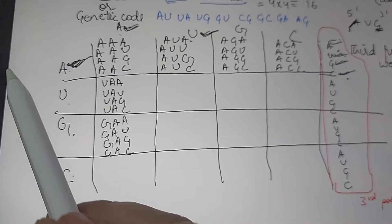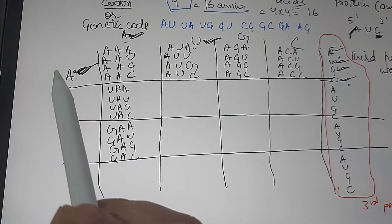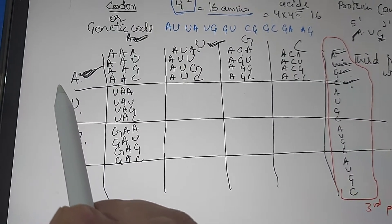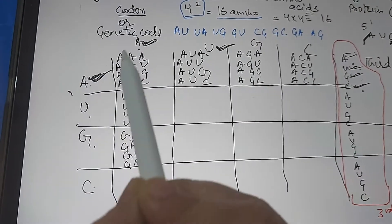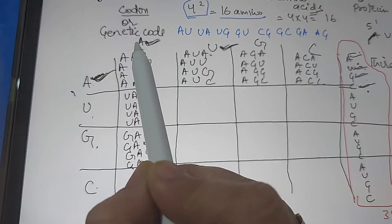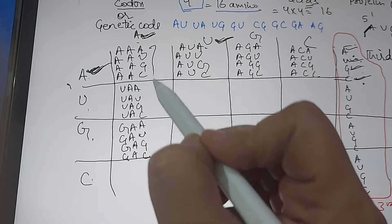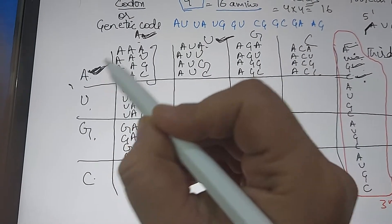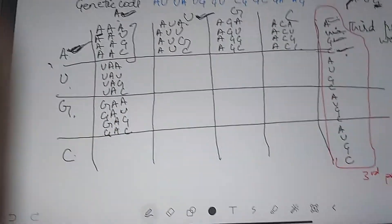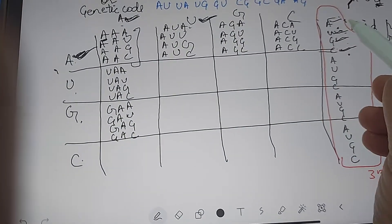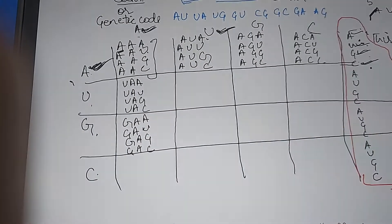However, the first position is fixed, and the second position is also fixed. For example, here the first position is A, the second position is A, and the third position is A — but the third position can have A, U, G, or C.